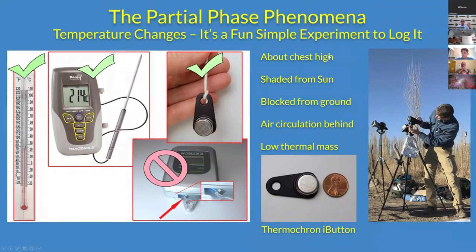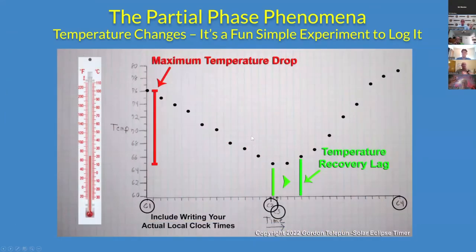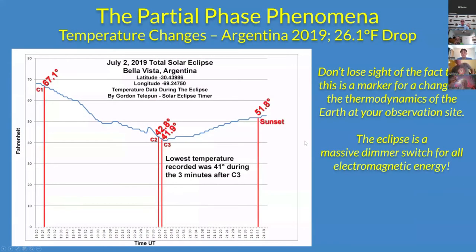If you want to take temperature readings, mount your device at about chest height and shade it from the sun with tinfoil. If it's a warm climate, also shade it from the ground to block reflected energy coming up from below. Allow air circulation behind it, since you're trying to monitor ambient air temperature, and pick a device with low thermal mass. Students can take a temperature reading about every five minutes, plot temperature versus time, and write down the contact times. The key data to capture is the maximum temperature drop and the temperature recovery lag — the time it takes to start rising again.